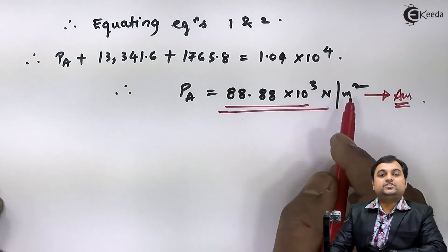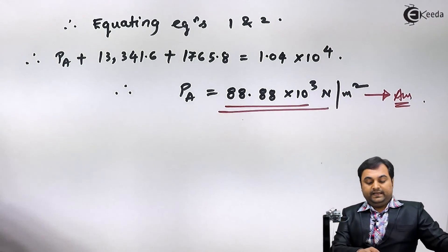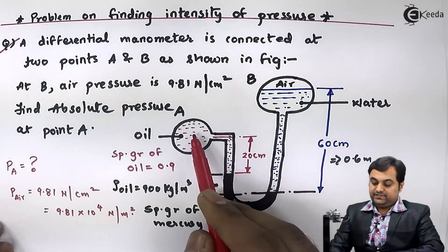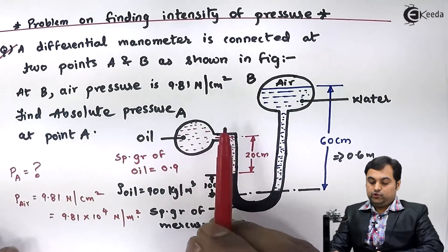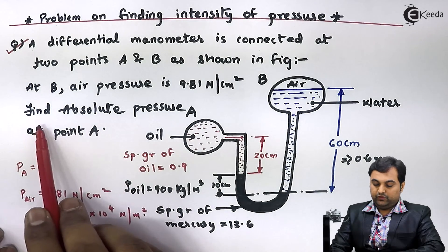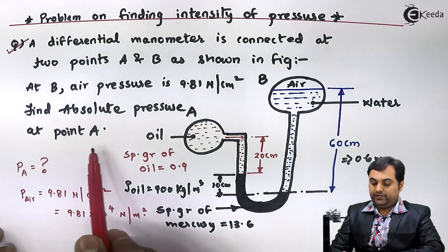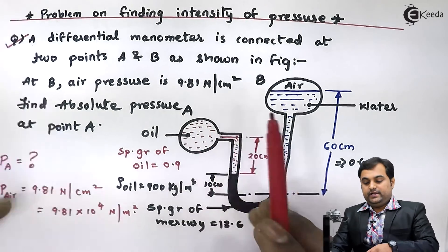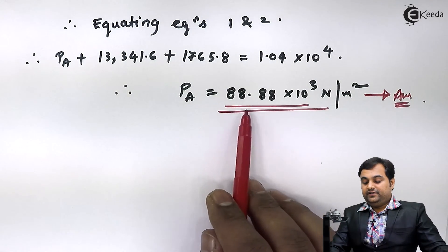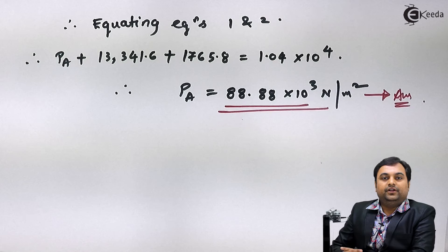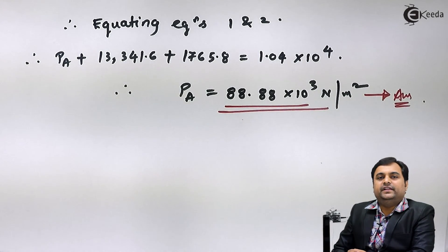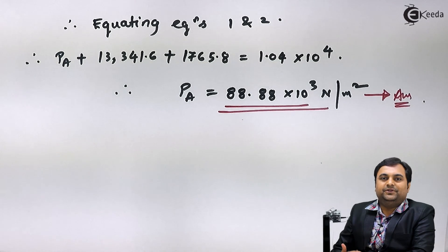This is the pressure of oil in pipeline A. The question asked us to find the absolute pressure at point A, so the absolute pressure at point A is nothing but the pressure of oil, which we have calculated. The answer is 88.88 × 10³ Newton per meter square. In this video we have seen how to calculate the absolute pressure of any liquid by using a differential U-tube manometer.